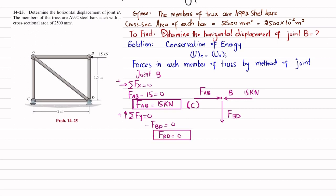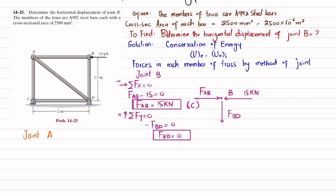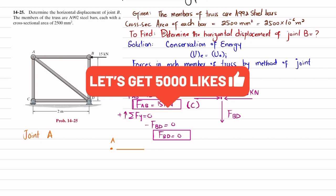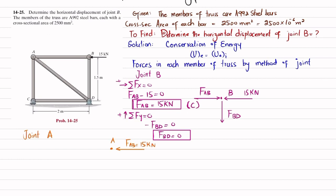Now moving to joint A. The member AB exerts force FAB = 15 kN on joint A. Member AD exerts force FAD on joint A, and member AC exerts force FAC. Drawing the free body diagram of joint A: FAB acts horizontally at 15 kN, FAC acts vertically, and FAD acts at an angle.